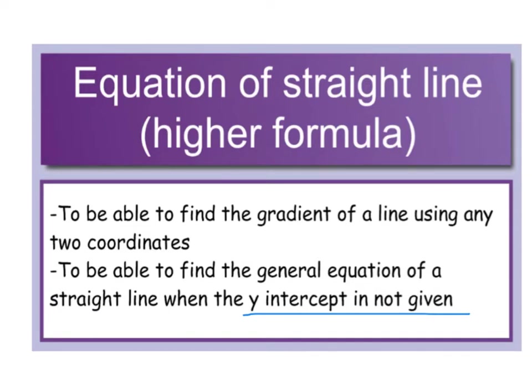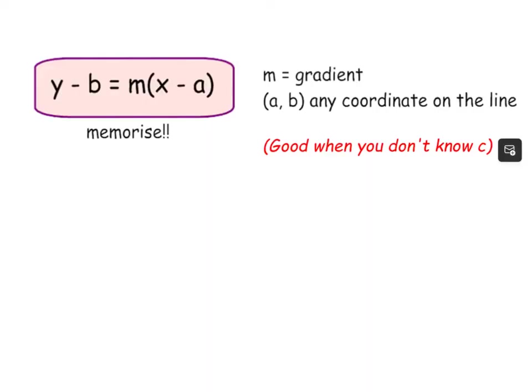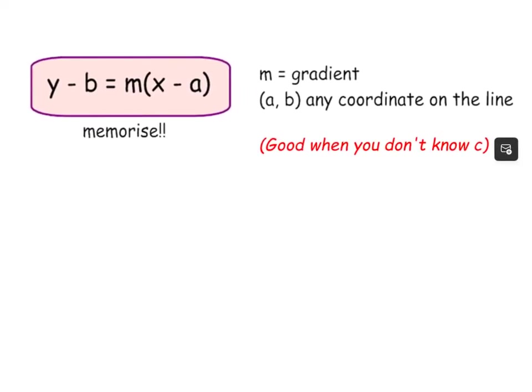Some people prefer to use this one all the time. Some people might use a mixture of two. So here is the formula here in the bubble: y - b = m(x - a). And again, you have to memorize this one. It is not given to you in the exam. So please memorize it, write it down.